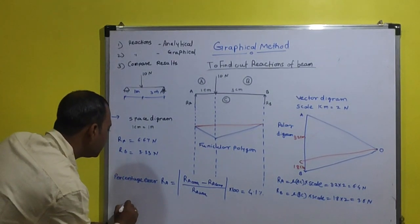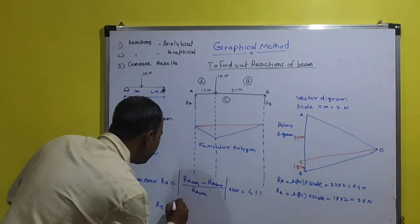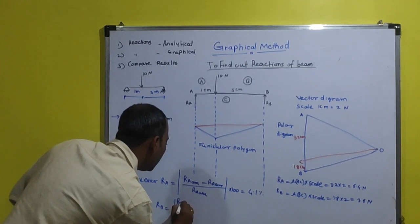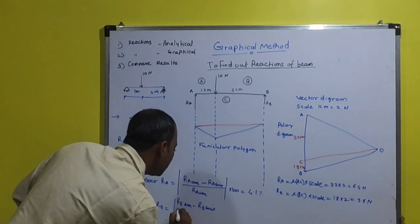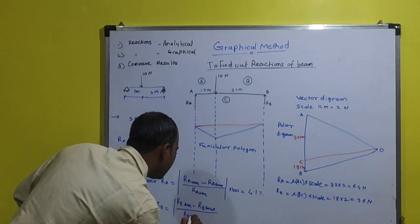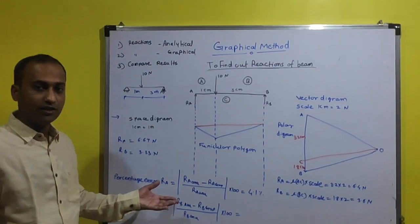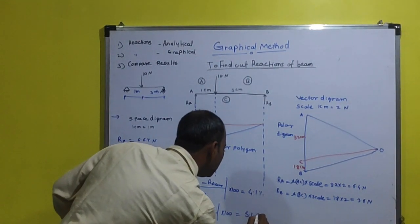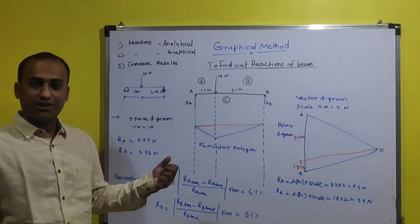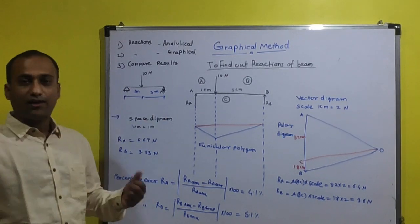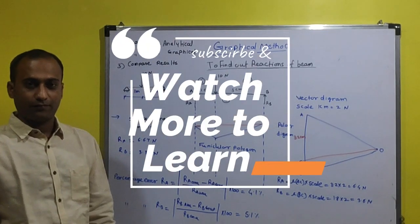Similarly, we calculate the percentage error for RB: (RB analytical − RB graphical) ÷ RB analytical × 100. This error comes out to be 5.1%. This is how we calculate the reactions of a simply supported beam by graphical method when the forces are parallel to each other. Thank you.